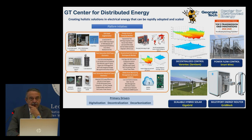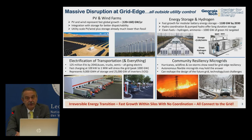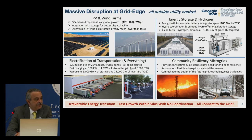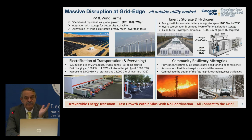We see massive disruption. Every customer is at the edge of the grid, so the disruption experience is going to be felt most at the grid edge. PV and wind are growing at a phenomenal pace — hundreds of gigawatts per year being deployed. We are integrating storage for better dispatchability. Storage is growing by itself. Hydrogen is growing very rapidly. Each of these numbers represents thousands of gigawatts of deployment.